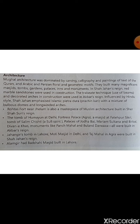The Mughals built many magnificent masjids, tombs, gardens, palaces, inns and monuments. During Shah Jahan's reign, red marble and stones were extensively used in construction. They constructed many great masjids, maqbaras, gardens, palaces and monuments. In Shah Jahan's era, red sun marble and stone were used in building.